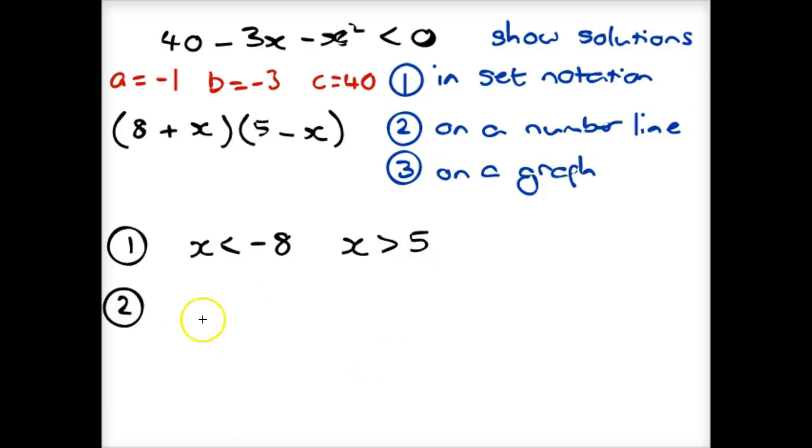If we were to show that on a number line, so we'd need a range of values from there to there. And because it's less than, we'll have an open dot. And because it's greater than, we'll have an open dot as well.